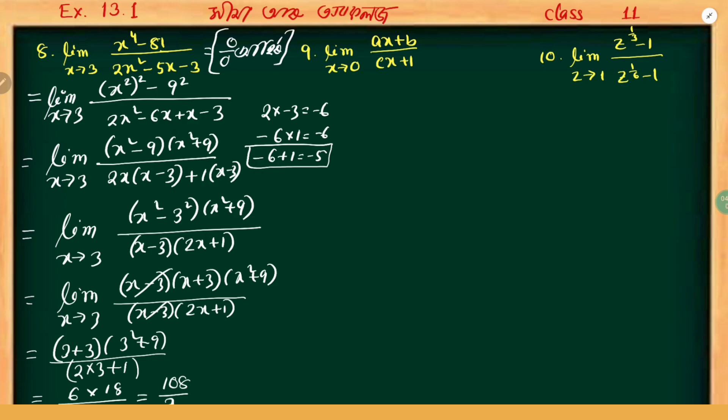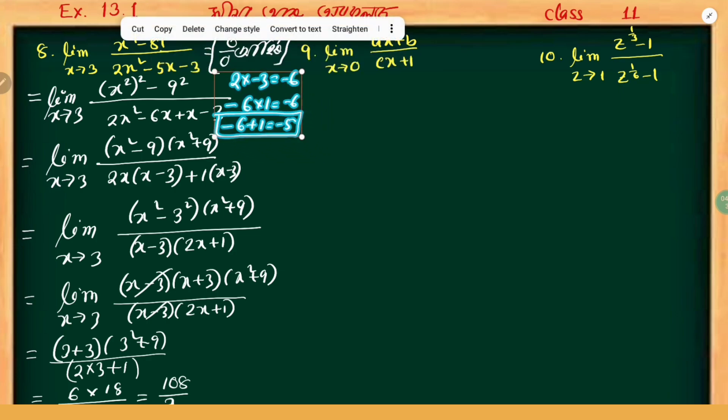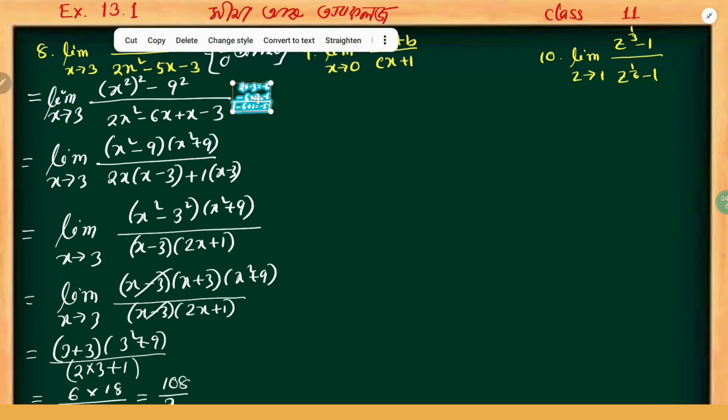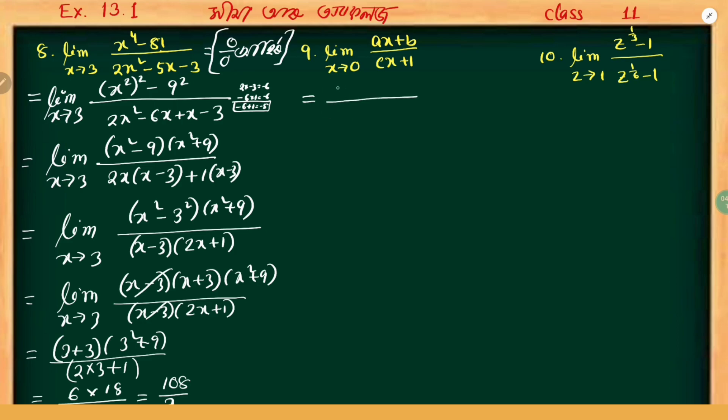That is our final answer. Next question is question number 9: limit x tends to 0, ax plus b divided by cx plus 1. When I put 0: a into 0 plus b divided by c into 0 plus 1 equals b by 1, which equals b.